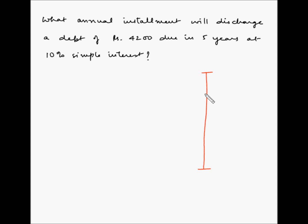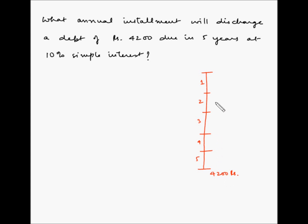Let's draw a timescale to understand this better. The timescale spans five years: one, two, three, four, and five. At the end of the five-year period, the amount due is 4200 rupees. You can either pay 4200 at the end of five years, or you can pay an equal installment every year. Let's say the installment is rupees X.